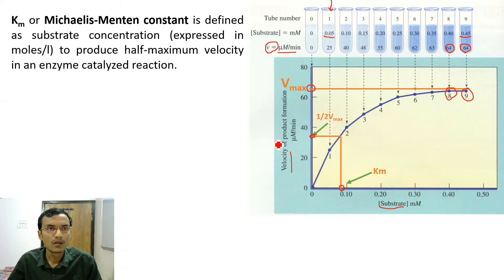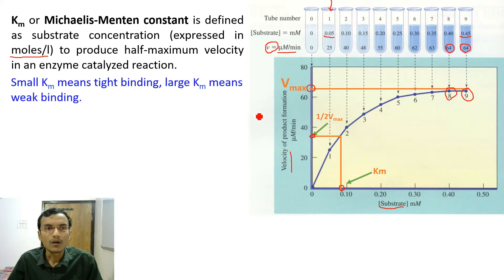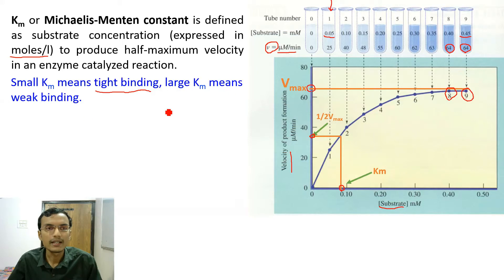The definition of Km: Km, or Michaelis constant, is defined as the substrate concentration expressed in moles per liter required to produce half-maximum velocity in an enzyme-catalyzed reaction. A small Km value means tight binding — strong affinity — between enzyme and substrate, while a large Km value means weak binding, or weak affinity, between enzyme and substrate.